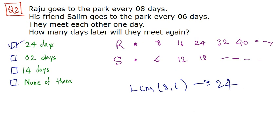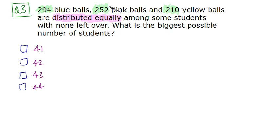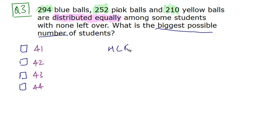Question three: there are 294 blue balls, 252 pink balls, and 210 yellow balls which are distributed equally among some students with none left over. What is the biggest possible number of students? To distribute equally, we divide by a common number, and for the biggest possible number of students, that number must be the highest common factor of 294, 252, and 210.